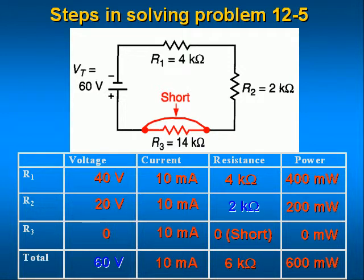Note that the total power dissipated in the resistors equals the total power supplied to the circuit by the power supply — that is, 400 plus 200 milliwatts equals 600 milliwatts. Note that the sum of the voltage drops across the resistors equals the supply voltage — that is, 40 plus 20 volts equals 60 volts.